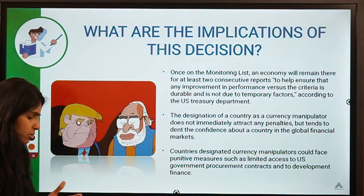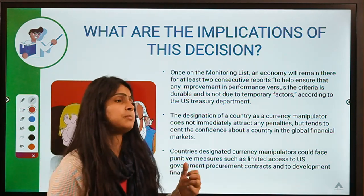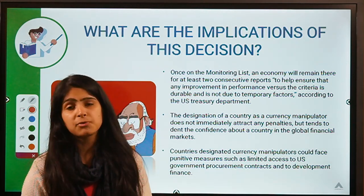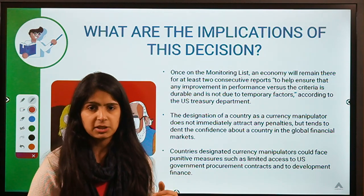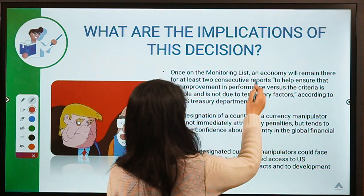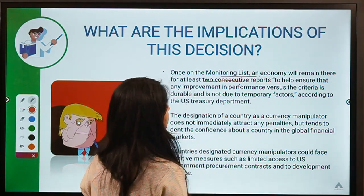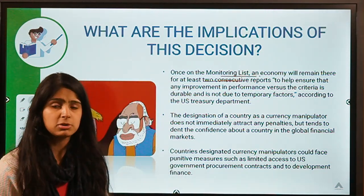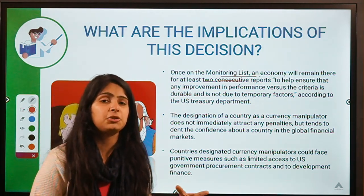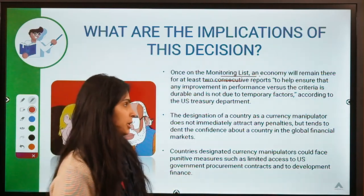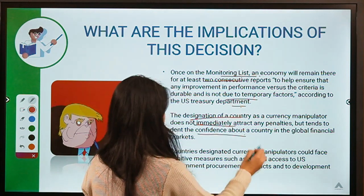The implications of this decision are not severe immediately — the US is not a regulator that will penalize these countries with punishments right away. However, it affects investor confidence, as investors may think the country is engaging in something problematic. An economy remains on the monitoring list for at least two consecutive reports, ensuring the country does not repeat the behavior. Designation as a currency manipulator does not immediately attract penalties but tends to hamper confidence.